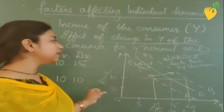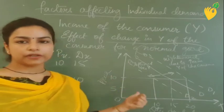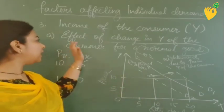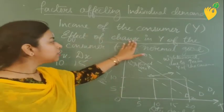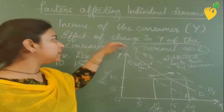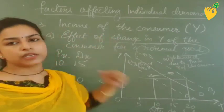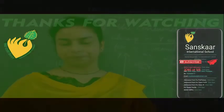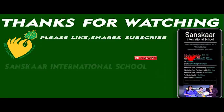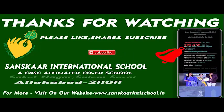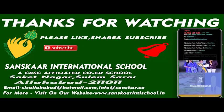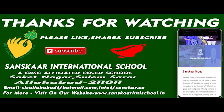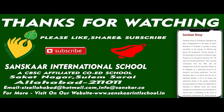Now let's talk about the next good, that is the inferior good — what will happen when there is a change in income of the consumer and how does it affect demand for an inferior good.